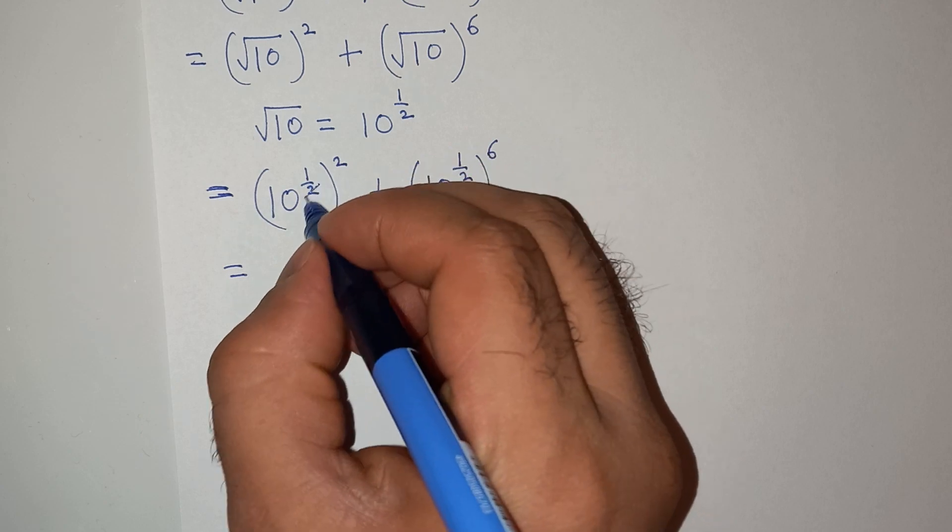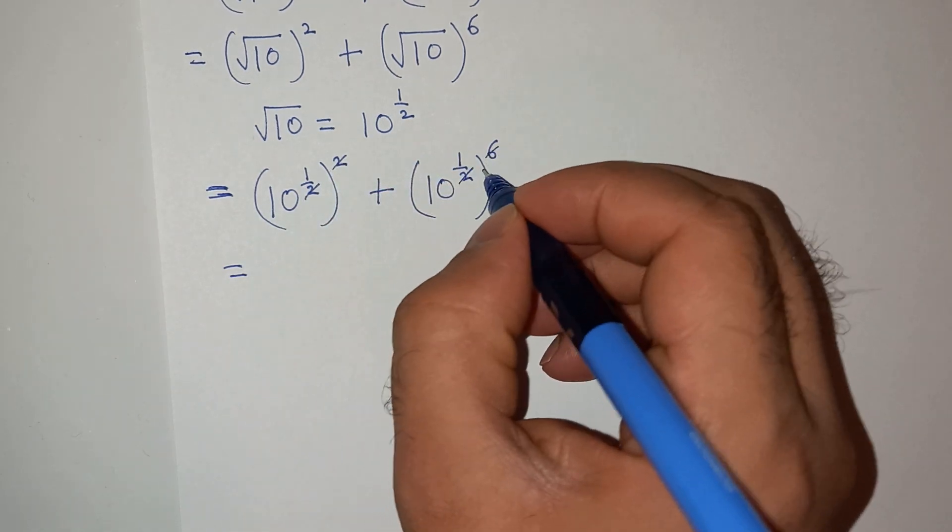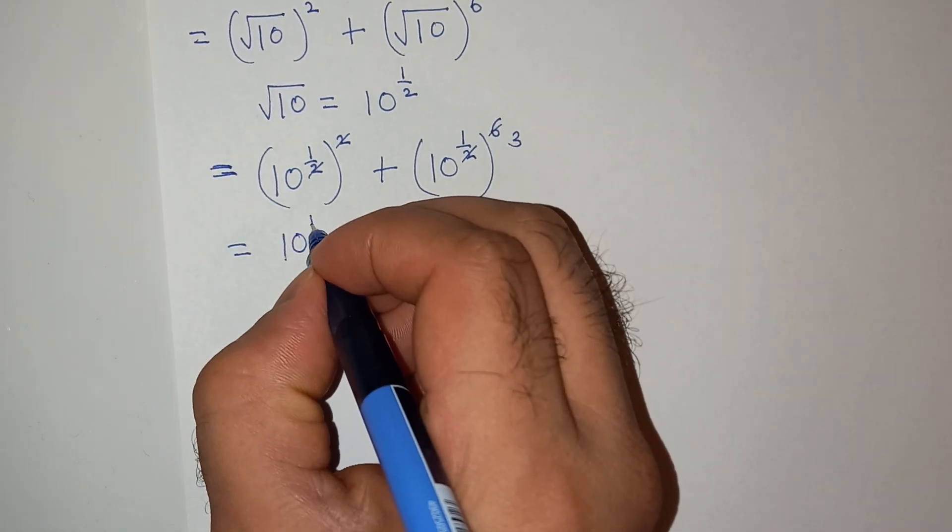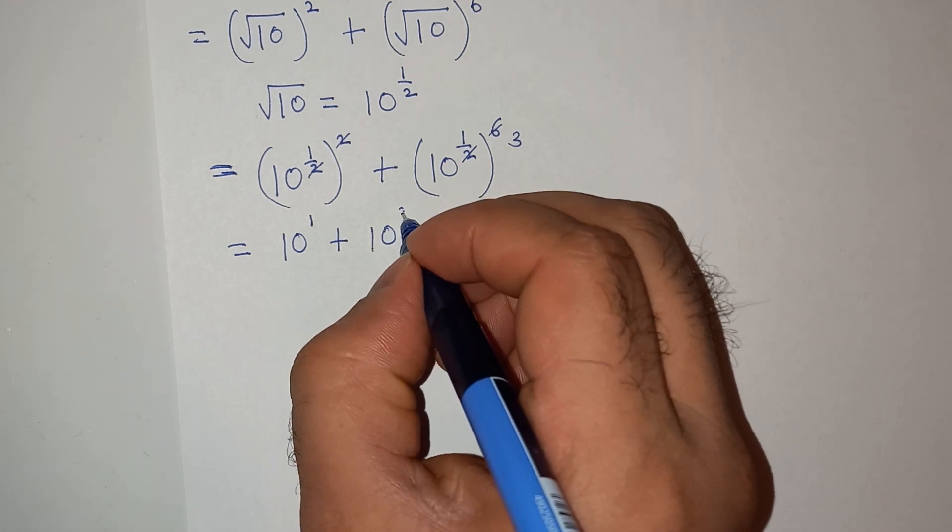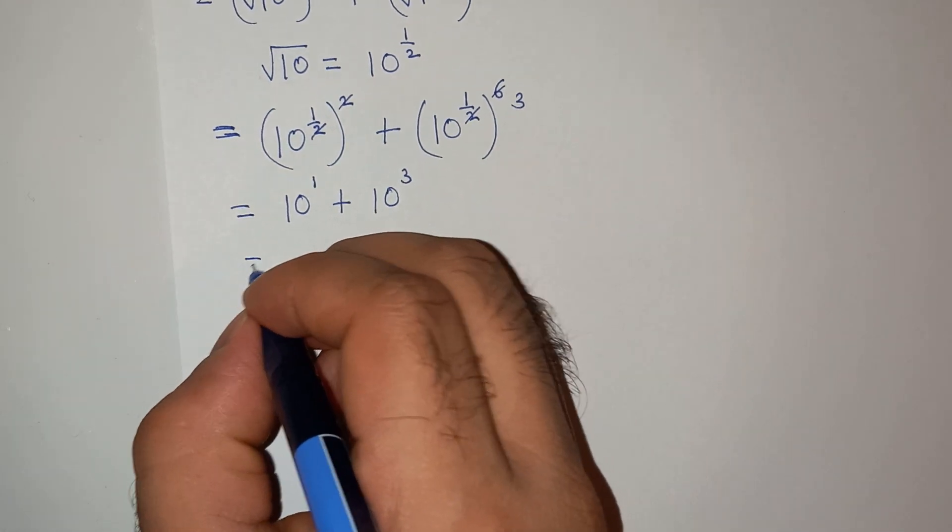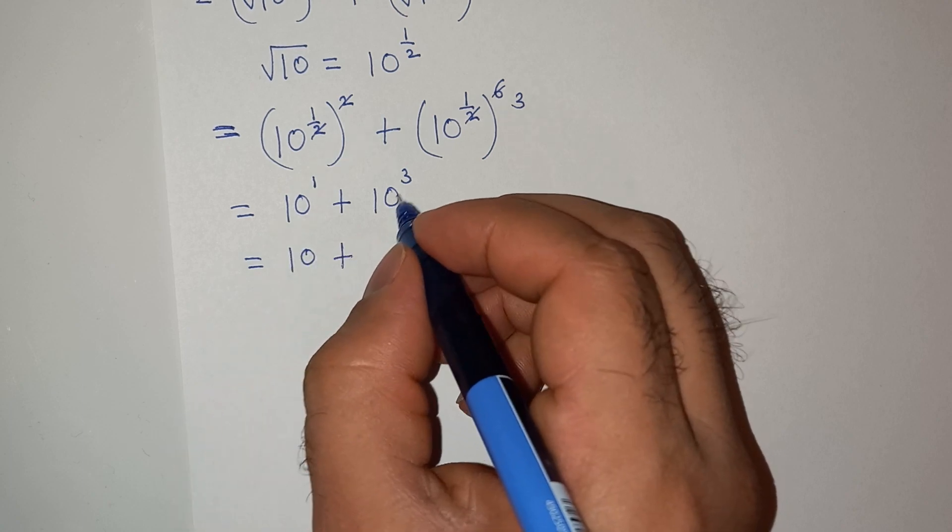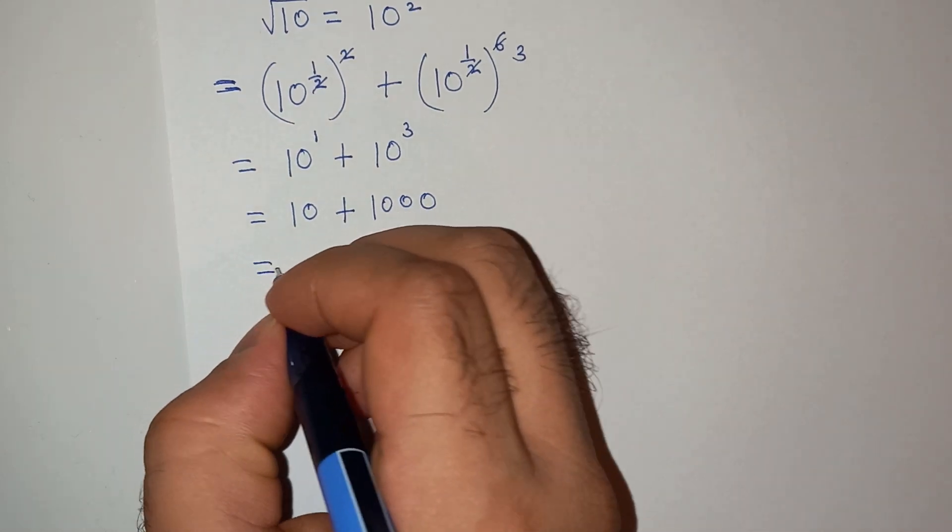This 2 and 2 will cancel, and 6 divided by 2 is 3. So we have 10 to the power 1 plus 10 to the power 3. 10 to the power 1 is 10, and 10 to the power 3 is 1000.